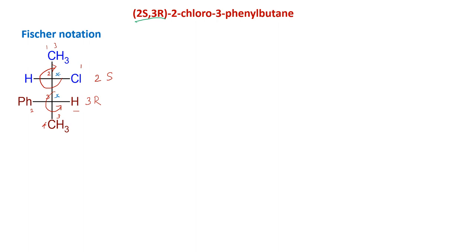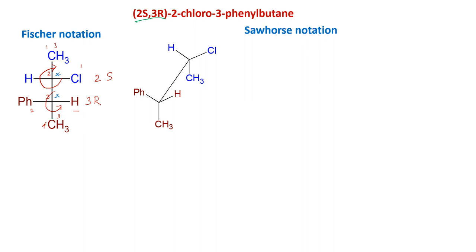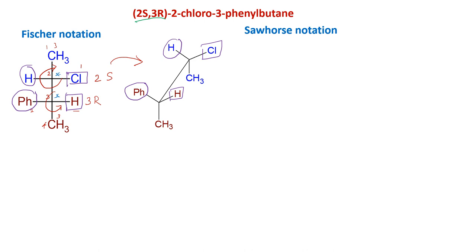This is how the name of the compound is assigned, and we can write the Fisher notation of this optically active compound. The Fisher notation is quite easy to write compared to other notations. From Fisher notation, we can write the Sawhorse notation. When converting Fisher to Sawhorse notation, it is always eclipsed and in a 2Y form — whatever is on the left-hand side in Fisher stays on the left, and groups on top and bottom go to the back.